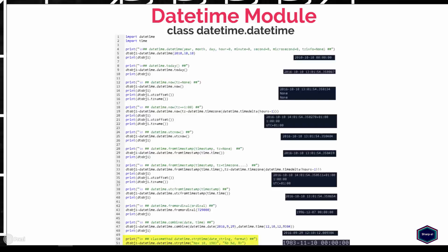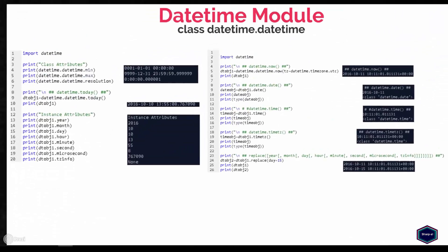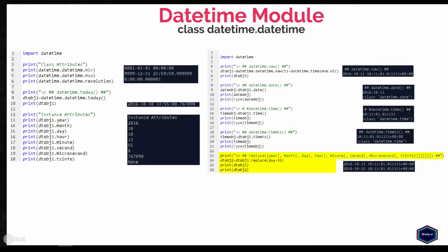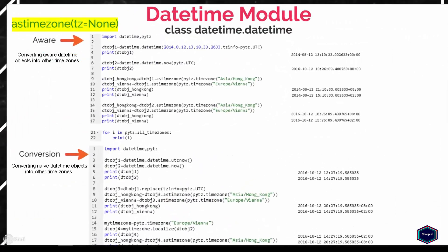The class method strptime creates a datetime object by parsing the date string according to the given format. The datetime class also provides class and instance attributes, as shown in these examples. The date method returns a date object with the same date, whereas the time method returns a time object with the same hour, minute, second, and microsecond, but the tzinfo attribute is set to None. The timetz method is just like the time method above, but the tzinfo attribute is not set to None. The replace method returns a new datetime object with one or more of the listed parameters replaced by new values. The astimezone method takes a timezone as an argument and converts a datetime object to the given timezone.